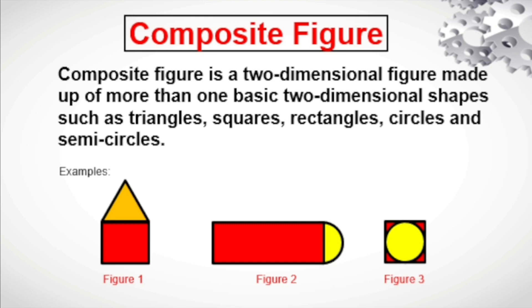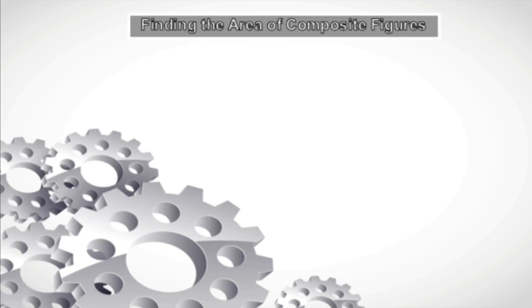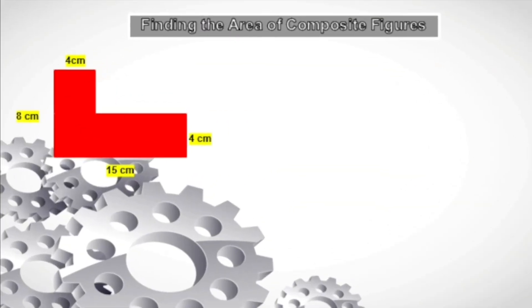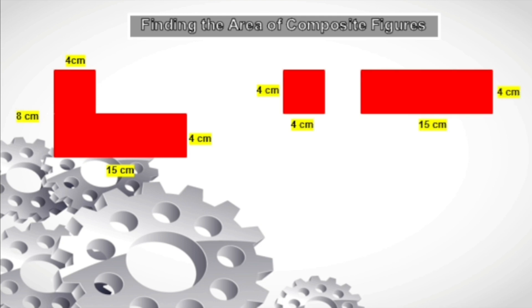Now, in order to find the area of composite figures, it is necessary that you can identify the basic shapes that make up a given figure. For a better understanding, let us try to find the area of this figure. To get the area of this figure, we need to separate or divide this into two different shapes.